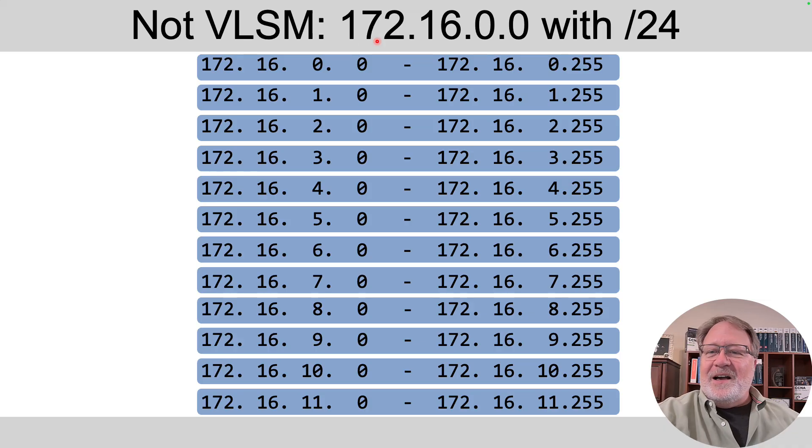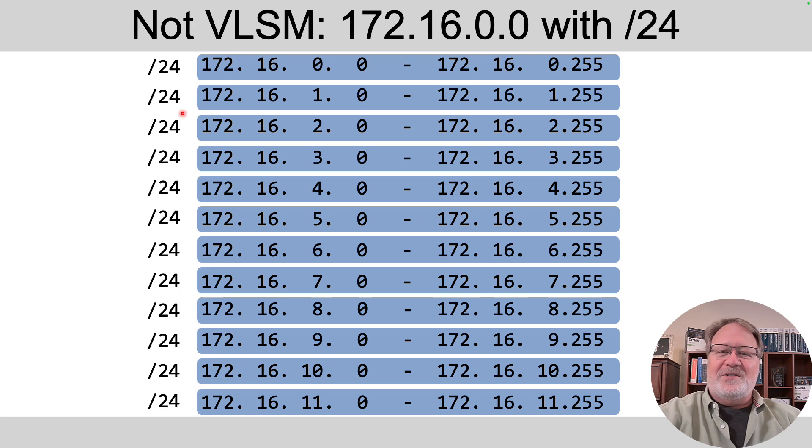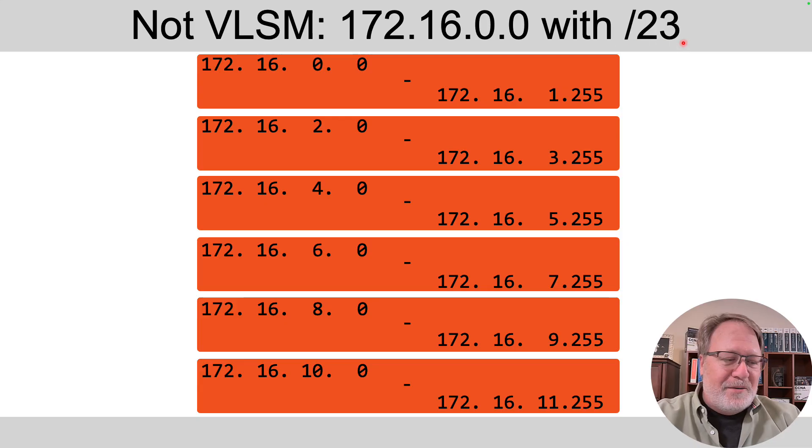For instance, if I've got this class B network and I choose to use only one mask, slash 24 for instance, so all these subnets have a slash 24 mask, it's not using VLSM. Or if instead I had used a slash 23 mask only and made the subnets twice as big, but all of them were slash 23, not VLSM.